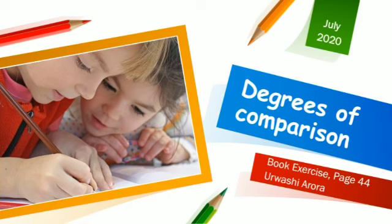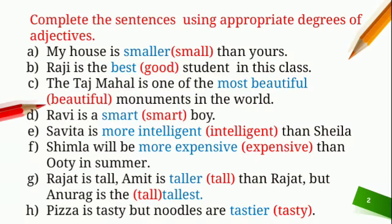So let's start. Sentence 1: My house is dash small than yours. Here, two houses are compared — my house and yours. So we will use 'smaller', and the sentence will be: My house is smaller than yours.